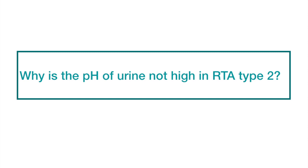Question number eight. Why is the pH of urine not high in type 2 renal tubular acidosis, although there is impaired absorption of the bicarbonate ion?